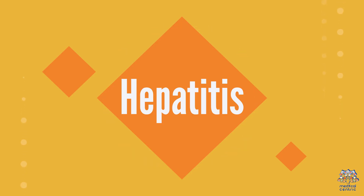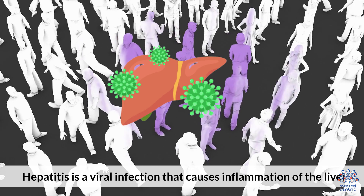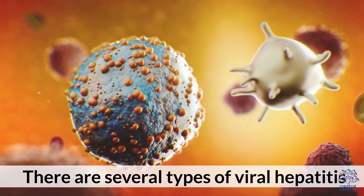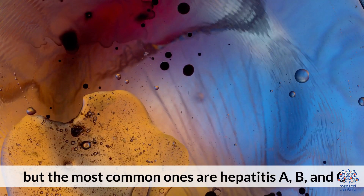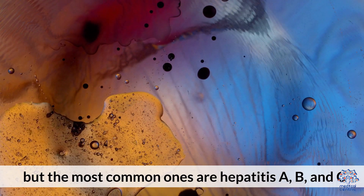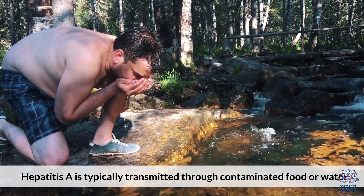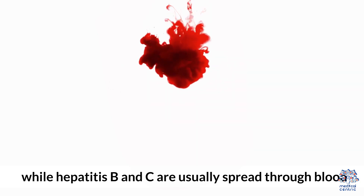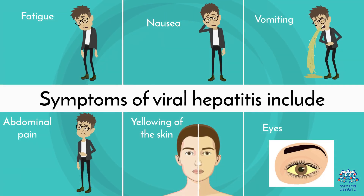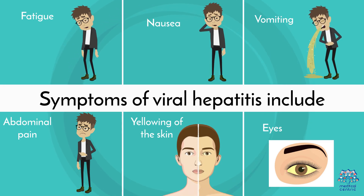Hepatitis is a viral infection that causes inflammation of the liver. There are several types of viral hepatitis, but the most common ones are hepatitis A, B, and C. Hepatitis A is typically transmitted through contaminated food or water, while hepatitis B and C are usually spread through blood. Symptoms of viral hepatitis include fatigue, nausea, vomiting, abdominal pain, and yellowing of the skin and eyes.